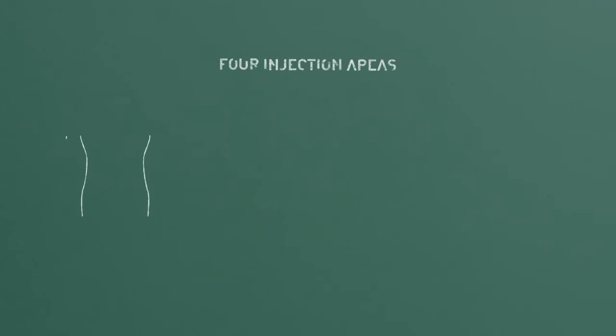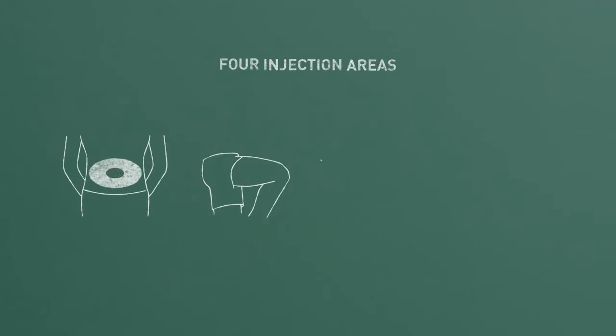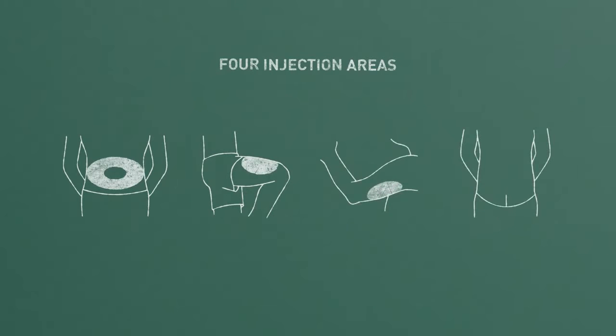There are four areas on your body where you can inject: your abdomen, your thighs, outer parts of your arms, and your buttocks. Those are the best areas to inject because that's where you have the most subcutaneous fat. And injecting into the fatty layer of your skin is where insulin is most consistently absorbed.